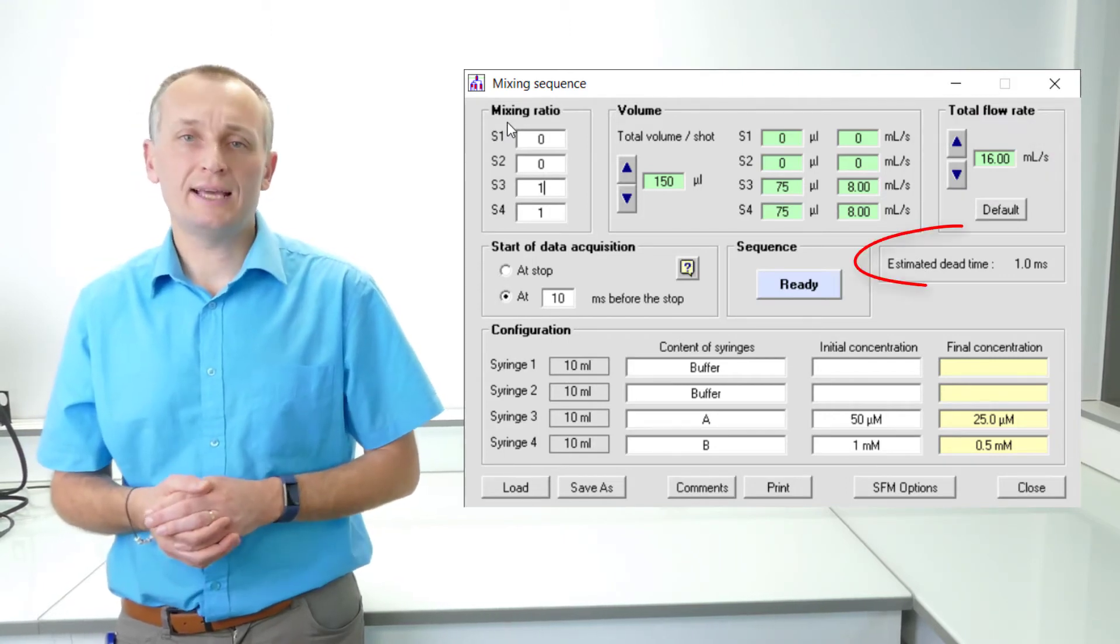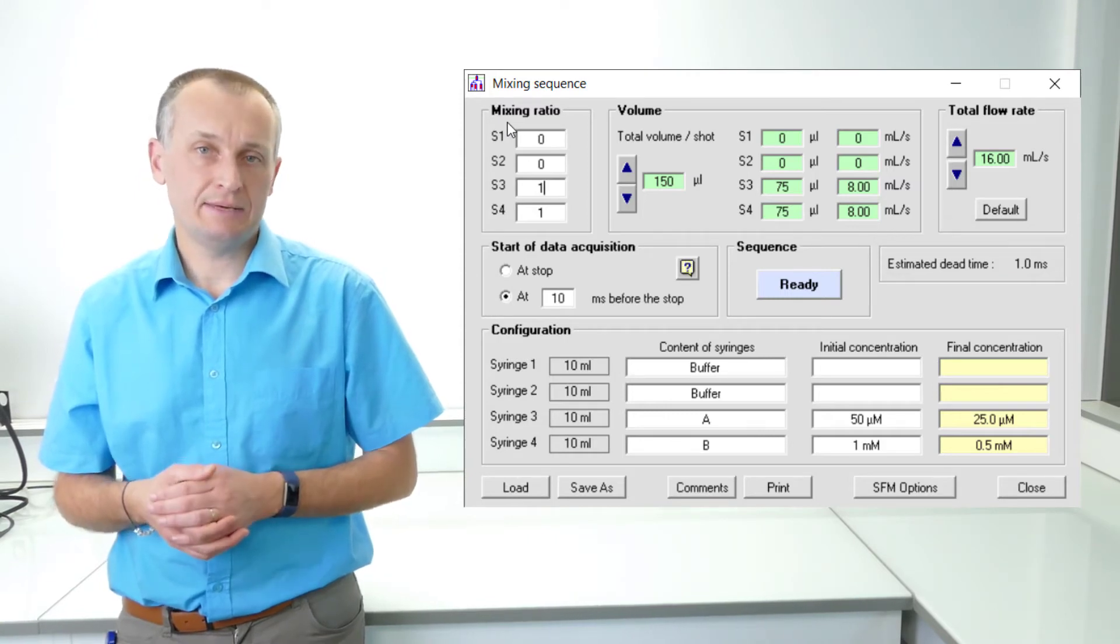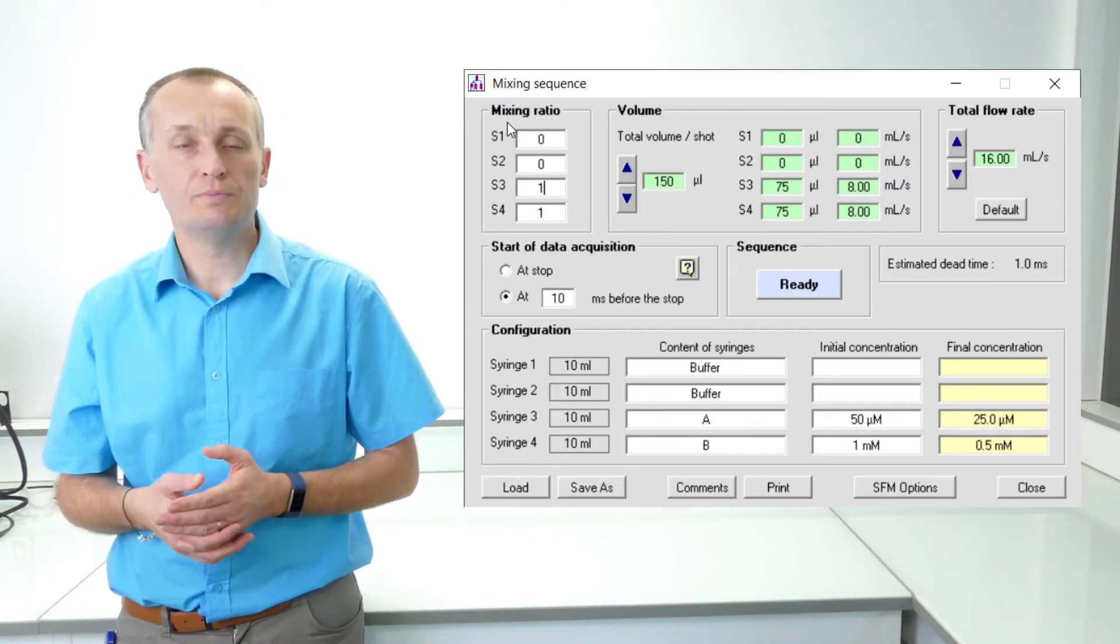The dead time can therefore be estimated by the software for each experiment. I said estimated because there could always be a small deviation on the real cell volume because of O-ring compression or because of some hydrodynamic phenomena. This deviation on dead time is in the range of 0.1 to 0.2 ms.